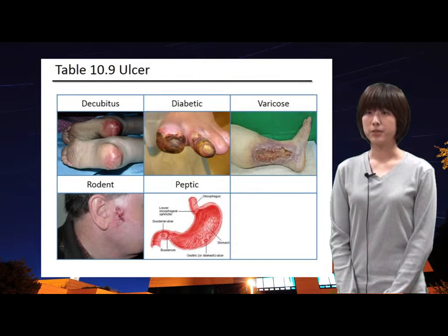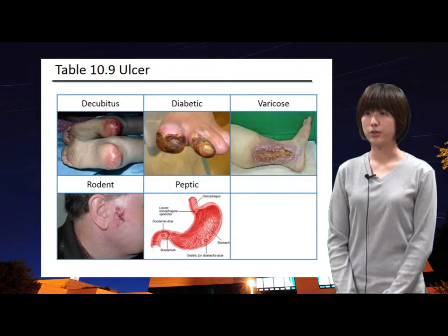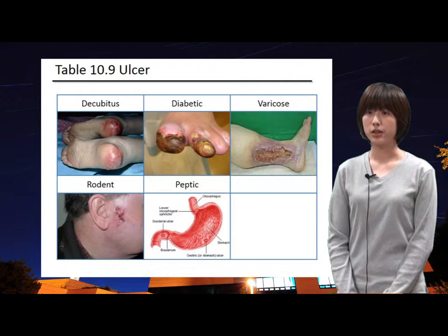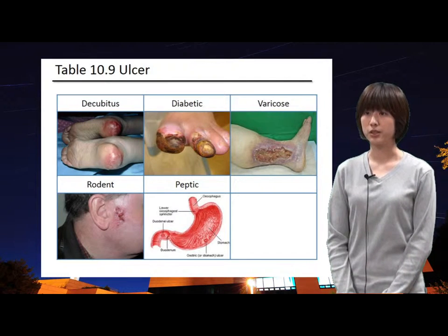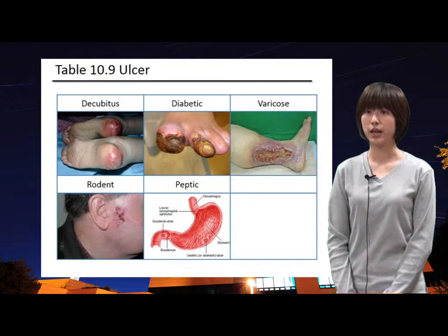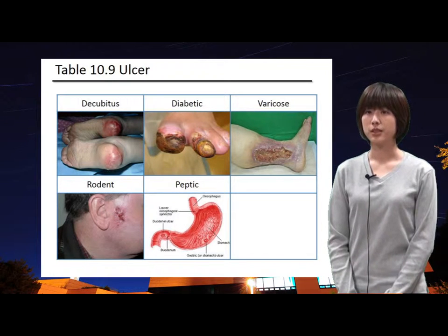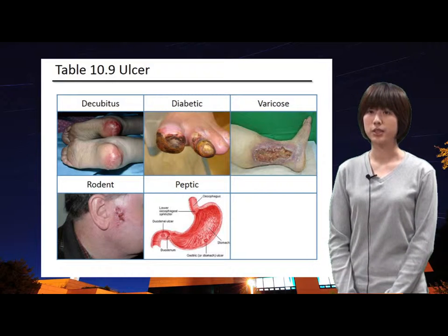There are five types of ulcers described by the author of the textbook: decubitus, diabetic, varicose, rodent, and peptic ulcers. Decubitus ulcer, also known as pressure ulcer, is caused by continuous pressure exerted on a particular area of skin. It is often associated with bed-ridden patients and develops more commonly over bony prominences such as heels, the lower part of one's back, and the bottom.